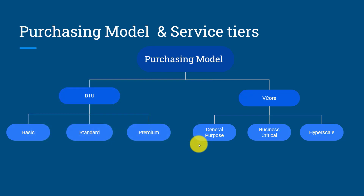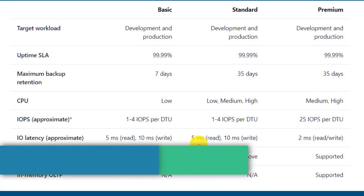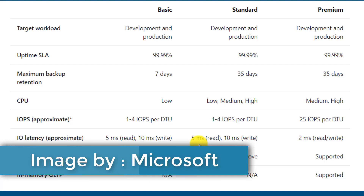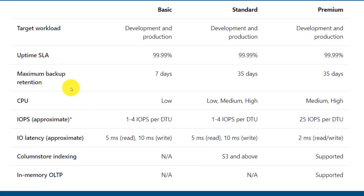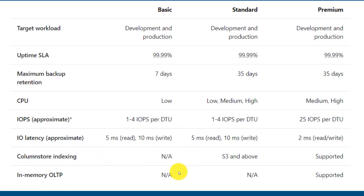The DTU based purchasing model provides three service tiers: basic, standard, and premium. The maximum backup retention period for basic is 7 days, while standard and premium offer 35 days. All service tiers provide 99.99% availability. Column store indexing is not provided by the basic service tier, and in-memory OLTP is not supported by basic or standard, but is supported by the premium service tier.